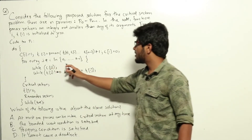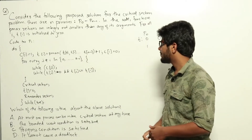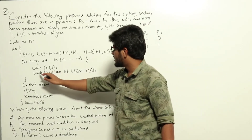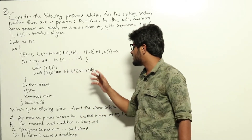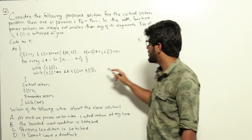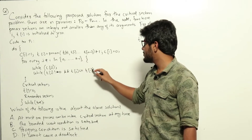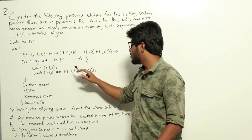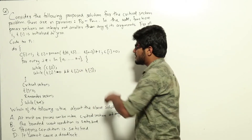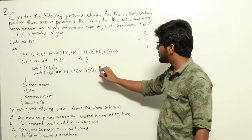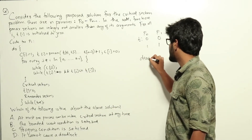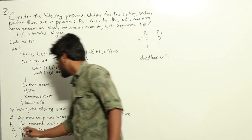Now for every j not equal to i, while c[j] - c[j] will be 0 for both p0 and p1. Looking at the second condition: while t[j] not equal to 0 and t[j] less than or equal to t[i]. For p0, t[1] is not equal to 0 (true, it's 1), and t[1] less than or equal to t[0] (1 ≤ 1, also true), so p0 is stuck. Similarly, for p1, t[0] is not equal to 0 and t[0] ≤ t[1] (1 ≤ 1), so p1 is also stuck. Both processes are stuck - that is clearly a deadlock. So option D is false.